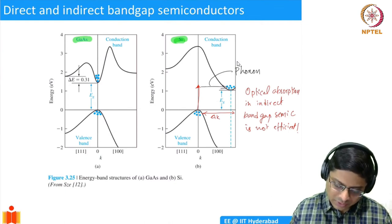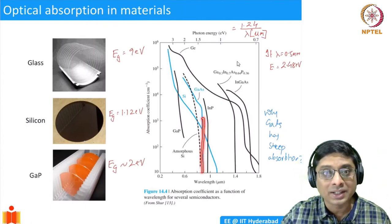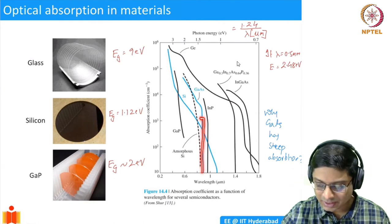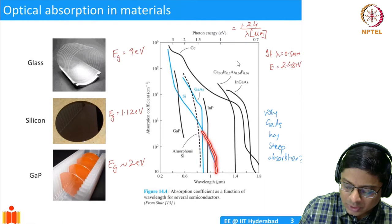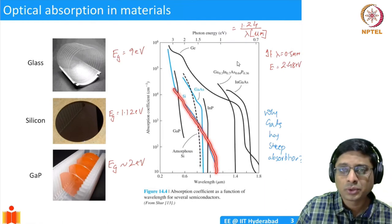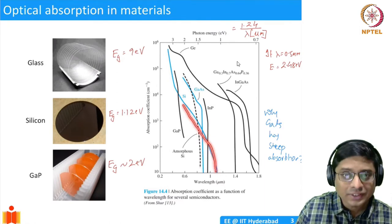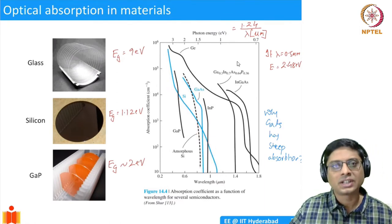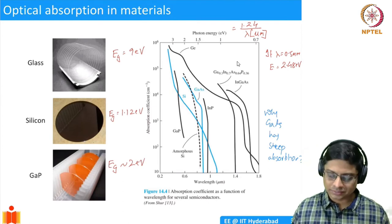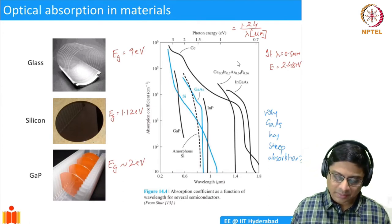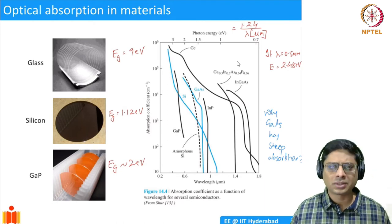This doesn't mean indirect band gap semiconductors are useless — they are still useful. But absorption efficiency is lower. In direct band gap semiconductors, only energy conservation is required — no momentum assistance — making them very efficient absorbers. That is why direct band gap materials like GaAs show a very steep increase in absorption above the band gap.